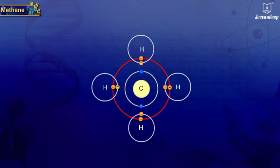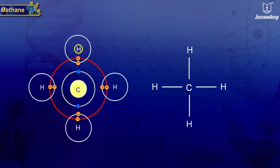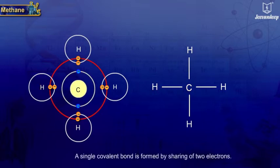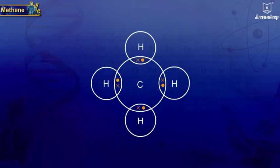In this process, four CH bonds are formed. Bonds formed by sharing of electrons are known as covalent bonds. A single covalent bond is formed by sharing of two electrons. In this structure, the electrons of carbon are represented by a cross and the electrons of hydrogen by a dot.